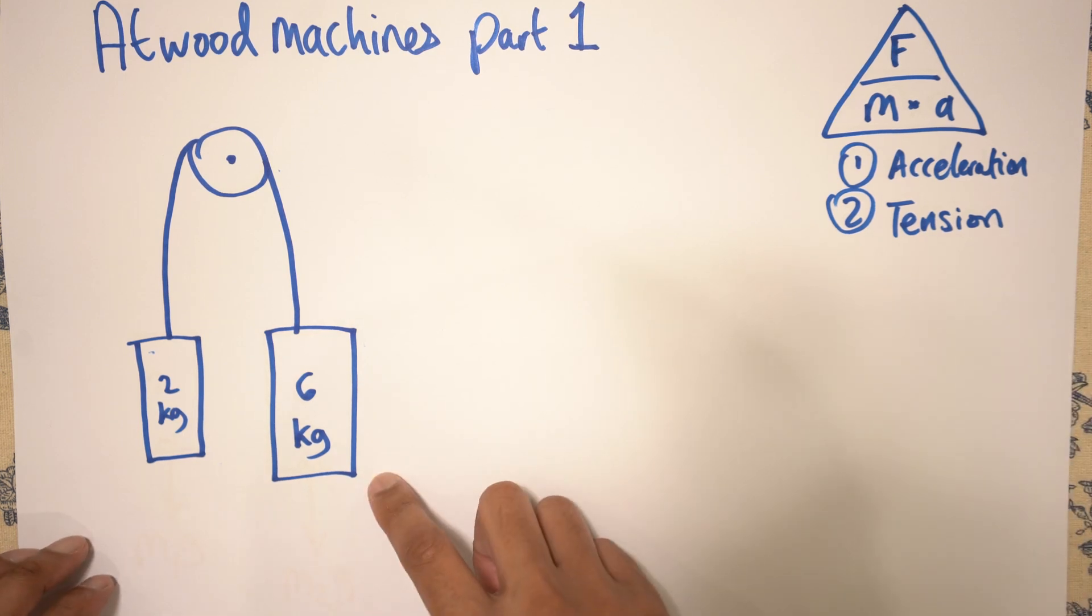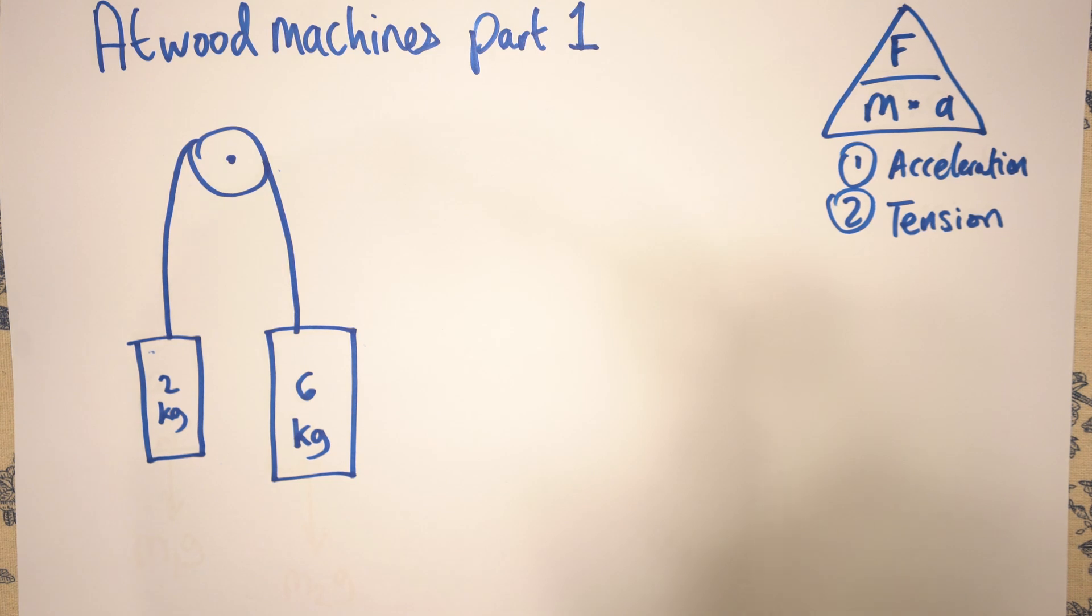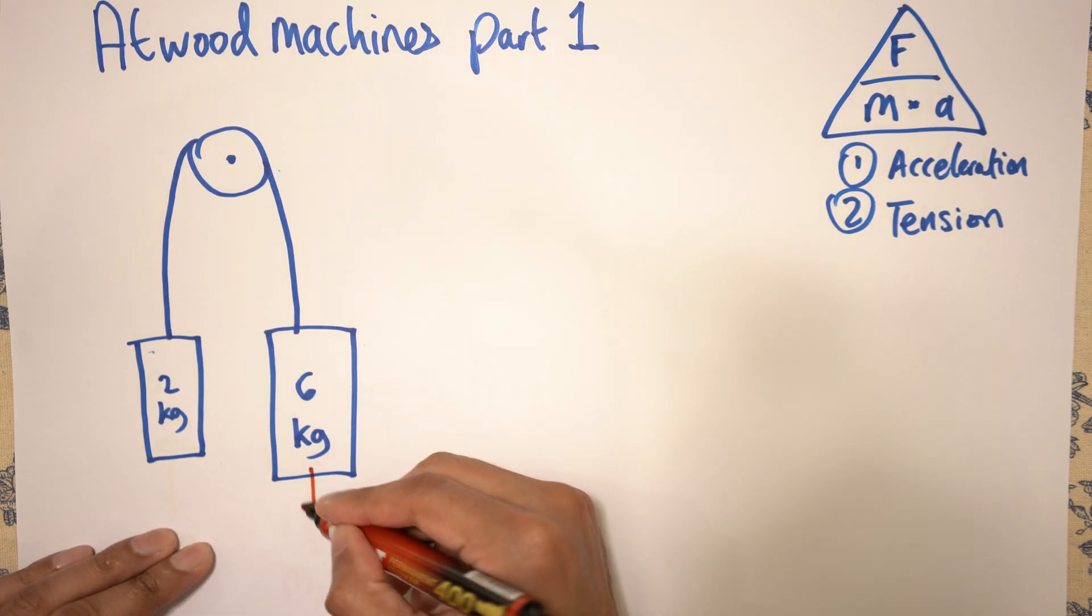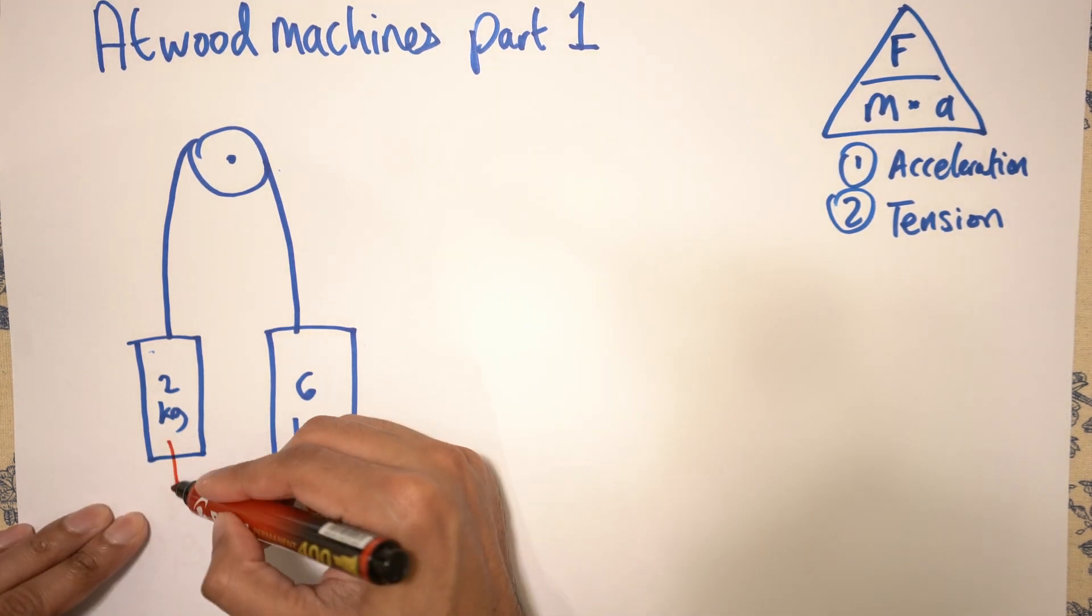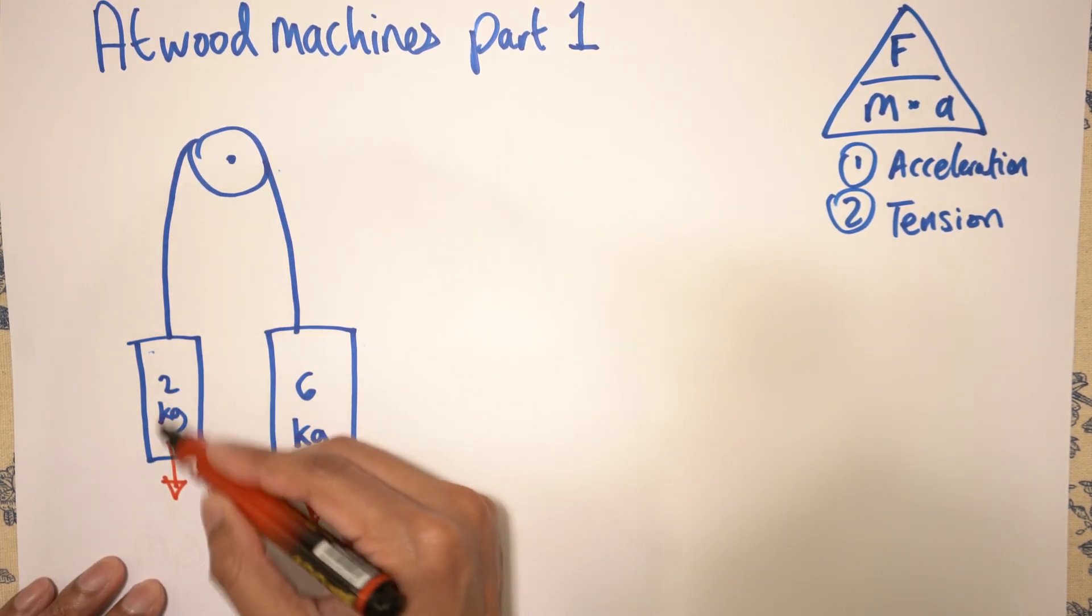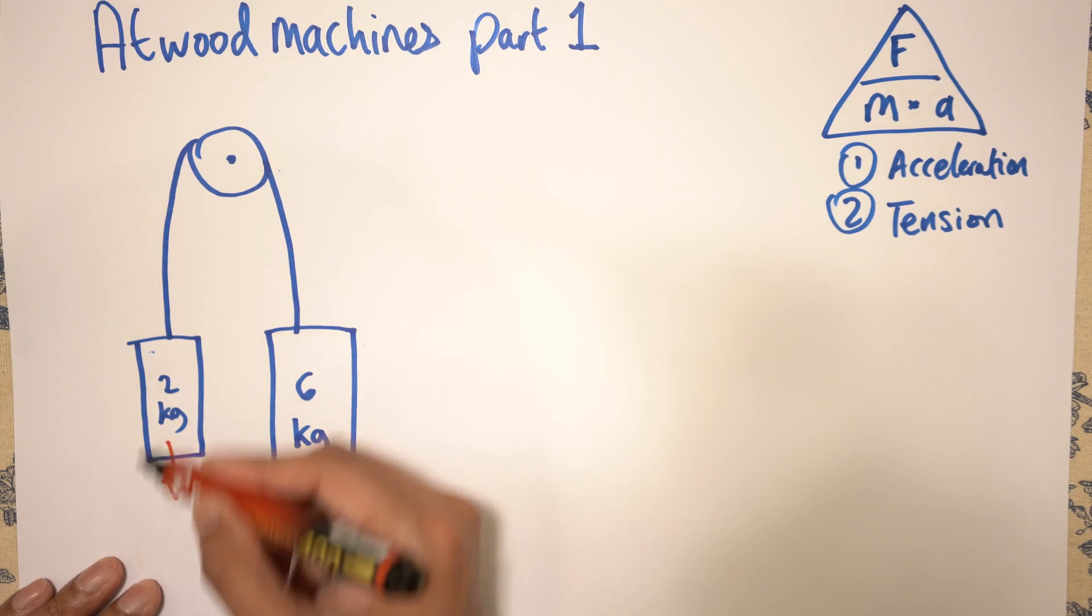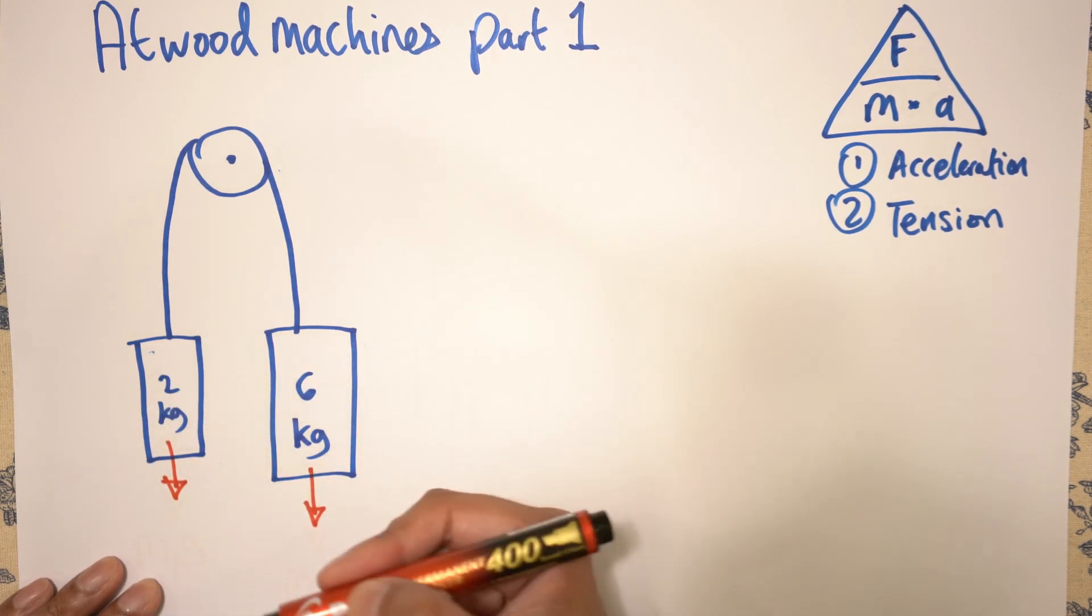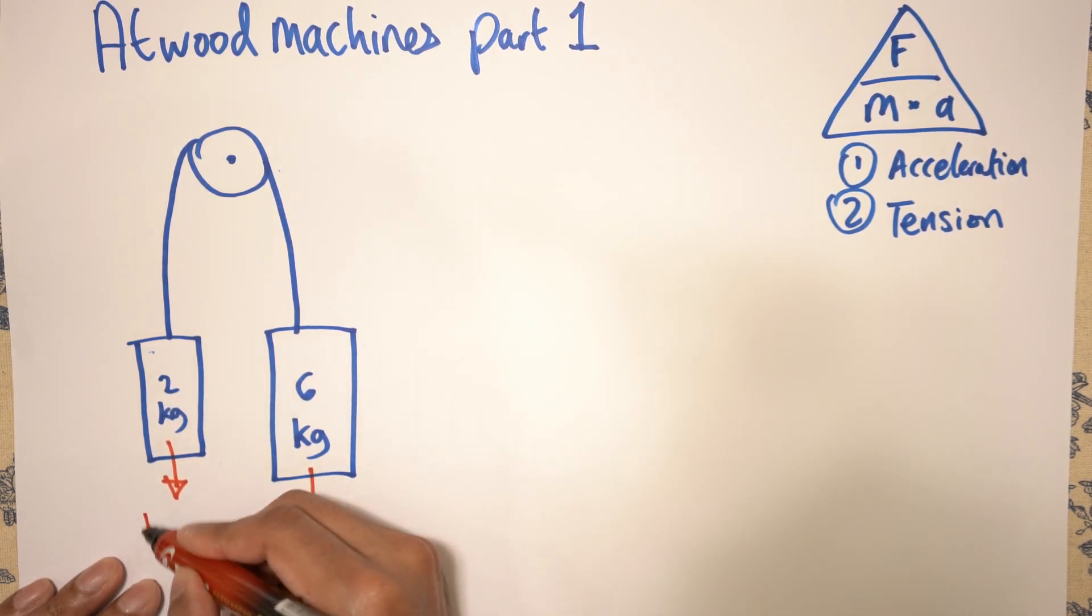So when we've got this situation we need to first of all identify our forces. So we've got one force going down here, and another force going down here. Let's call this mass 1 or m1, and this force is going to be the weight, and weight is m times g. So we can write m1g over here.